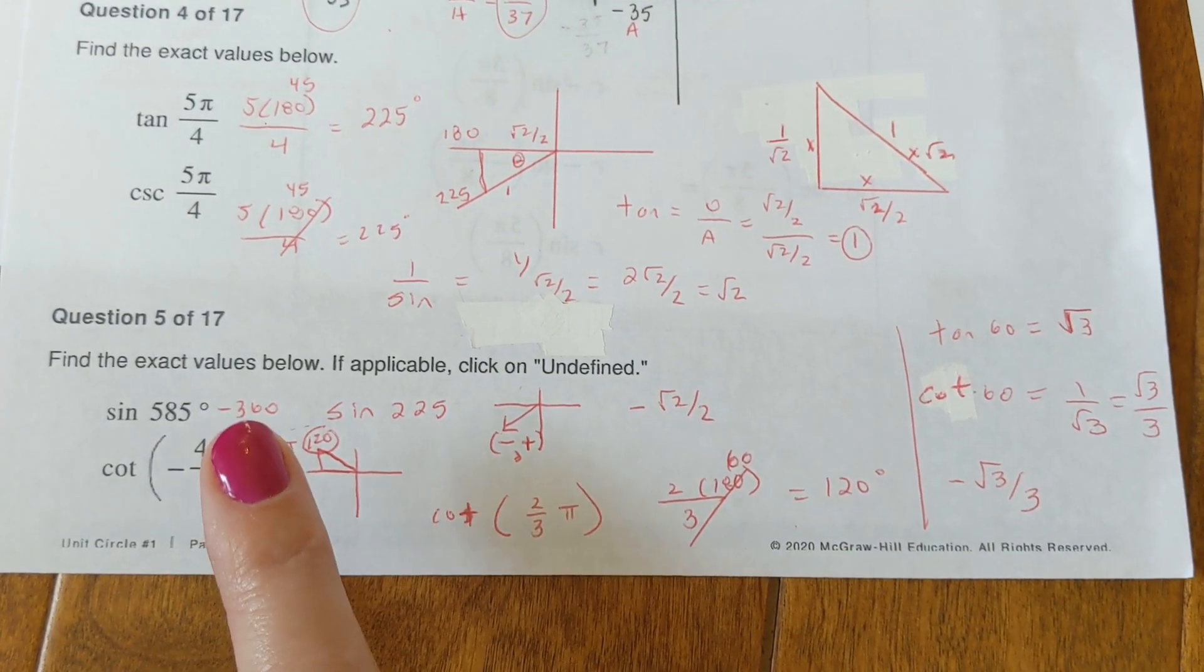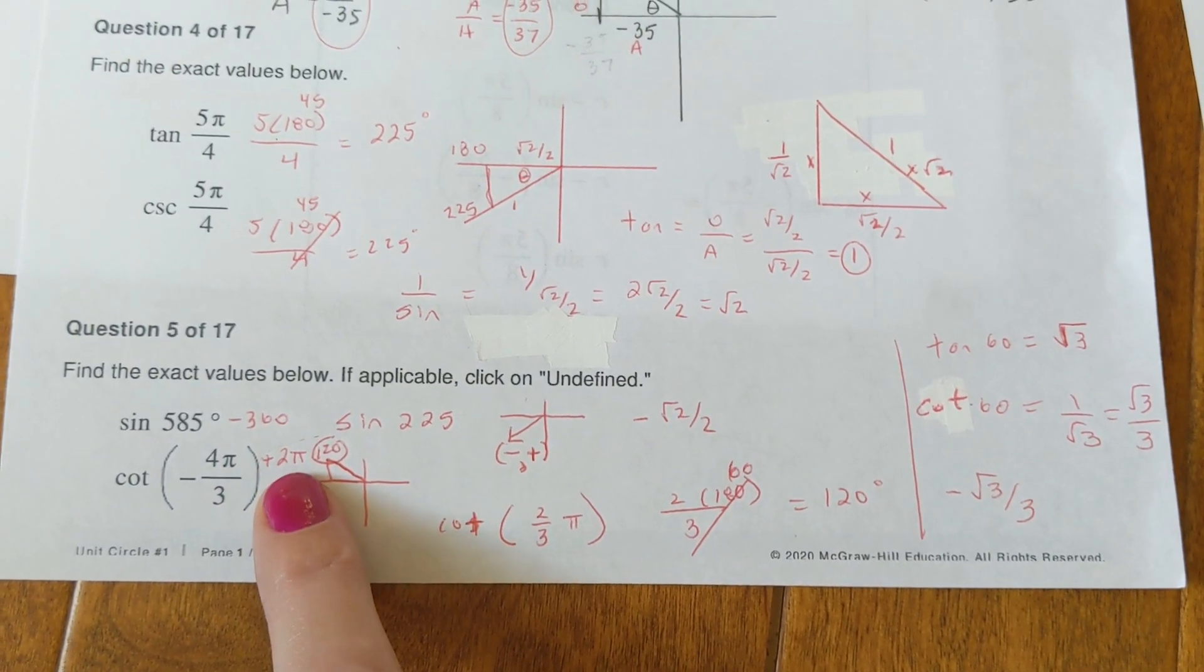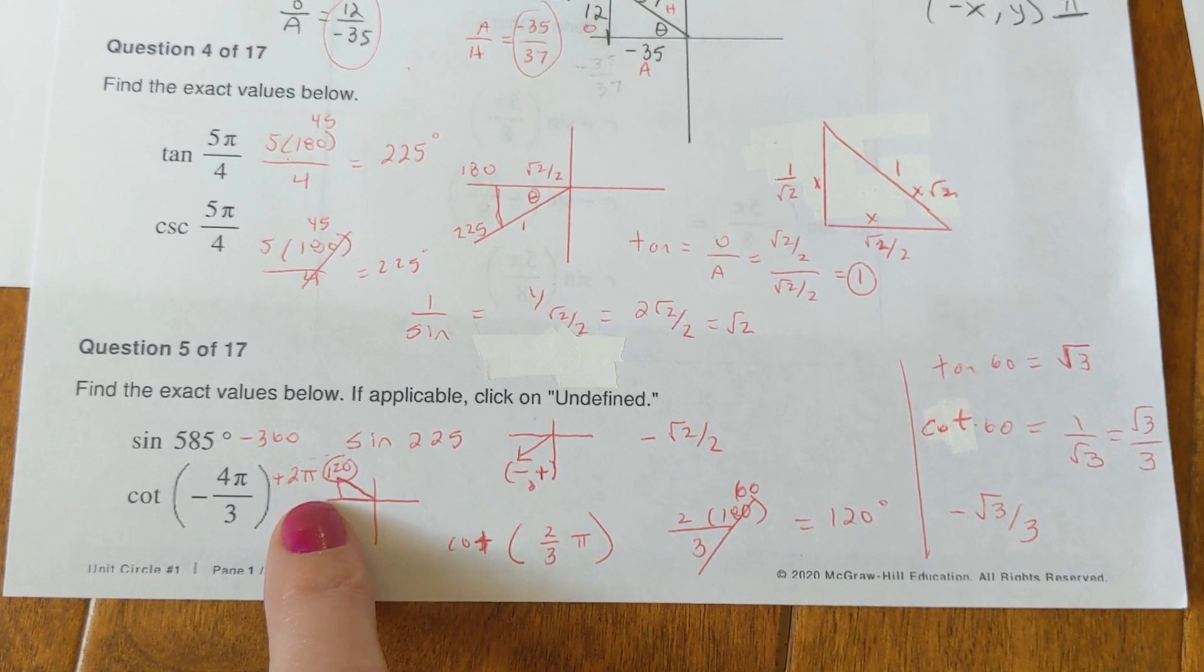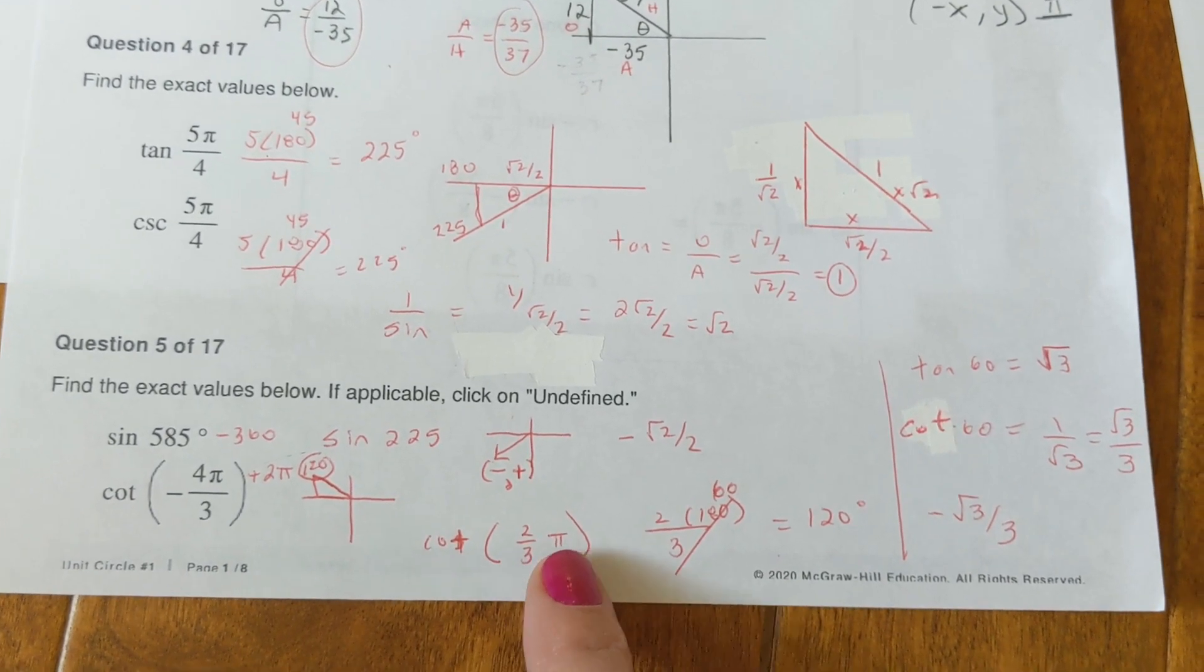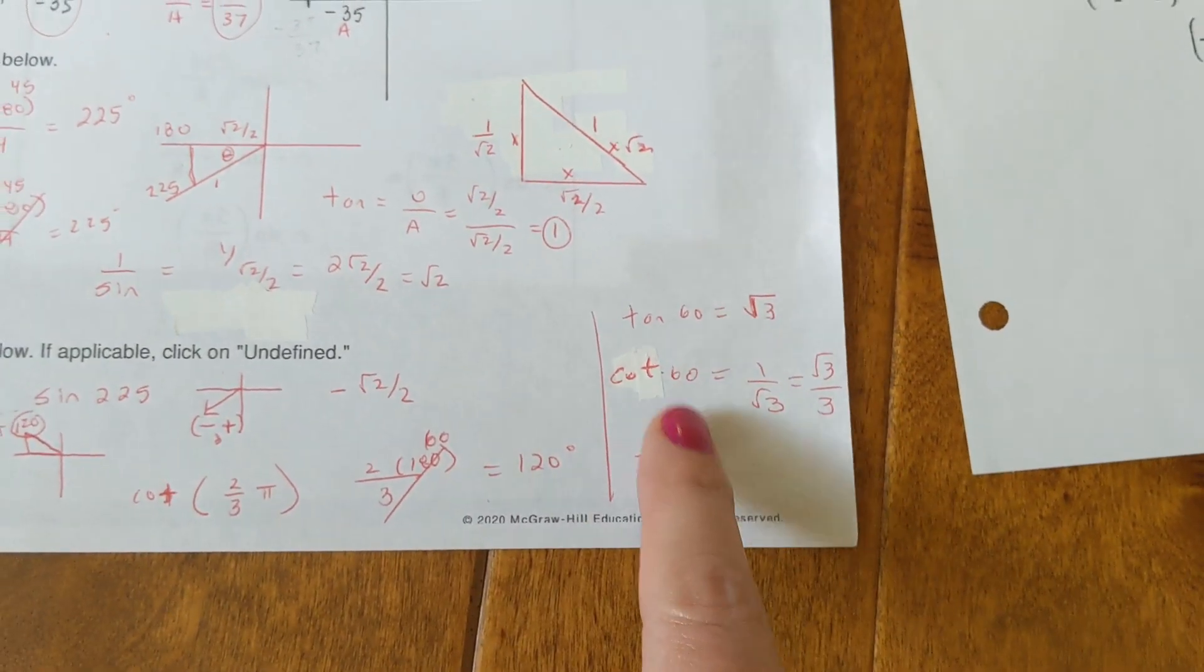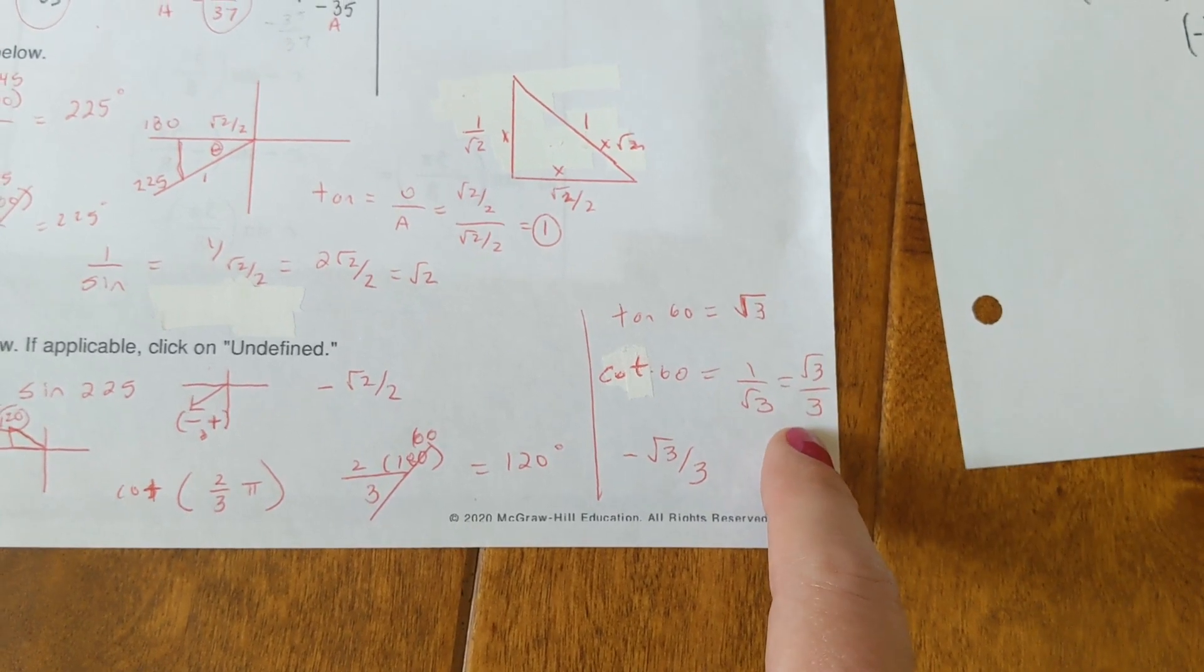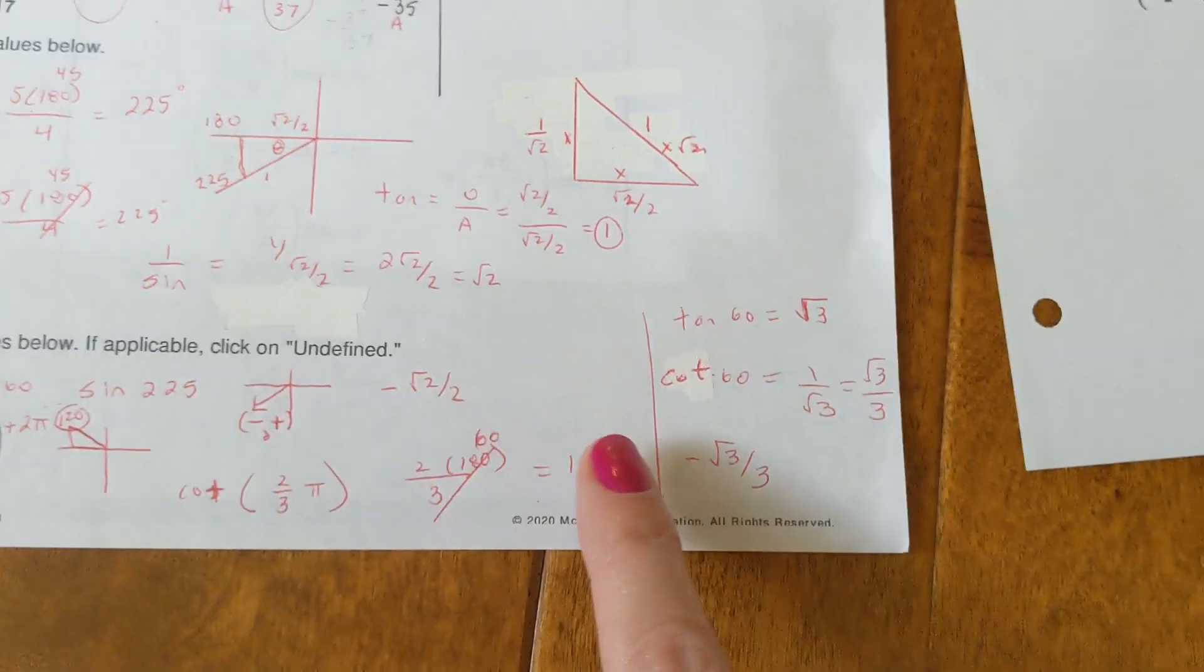Cotangent is the inverse of tangent. And it's negative, so let's add 2 pi. And if you add 2 pi to it, you get 2 pi over 3. On your calculator, what you can do is negative 4 thirds plus the number 2. And it'll give you the number 2 thirds. So you want the cotangent of 2 thirds, which is 120 degrees if you need it. And so when you do it, the whole thing then, the tangent of 60 is radical 3. And so the cotangent of 60 is 1 over radical 3, which is radical 3 over 3. And it's in the second quadrant over here, so that makes it negative.